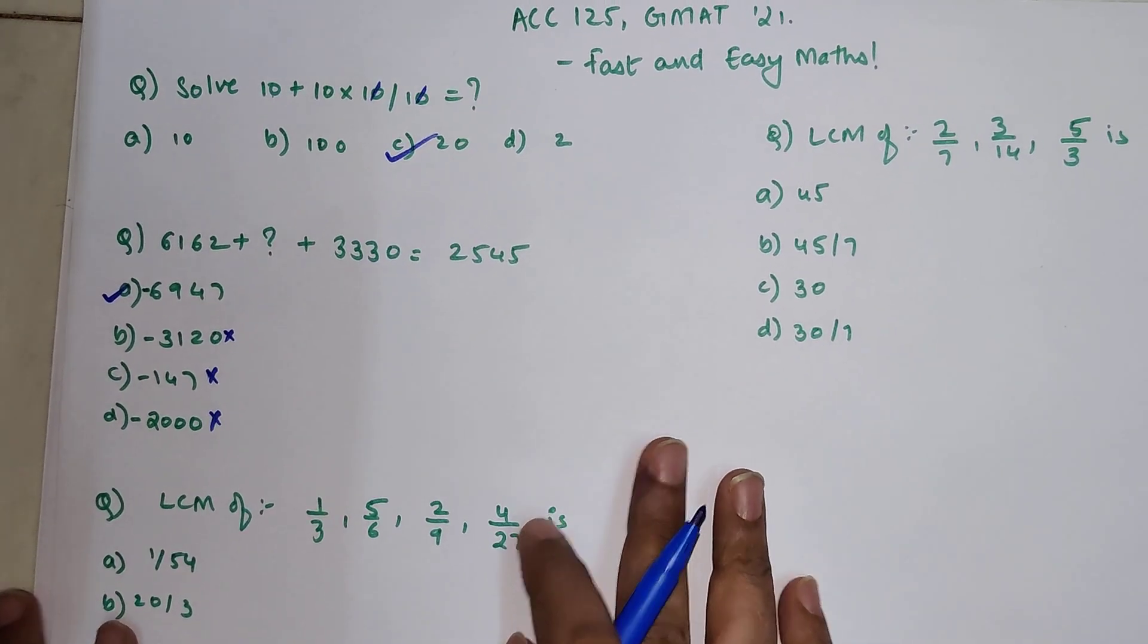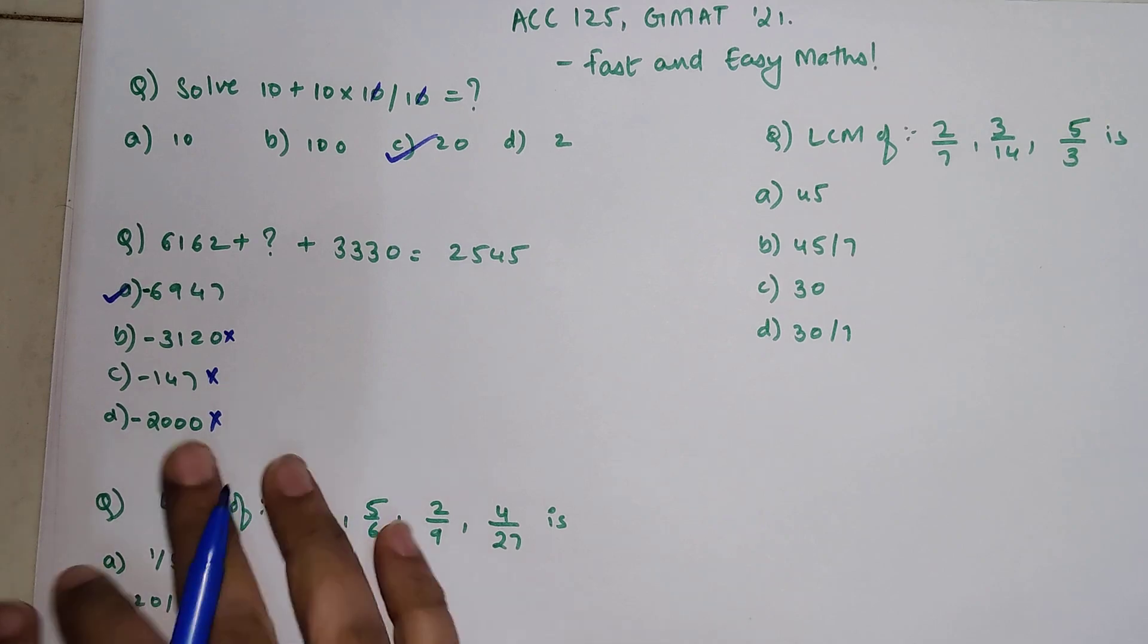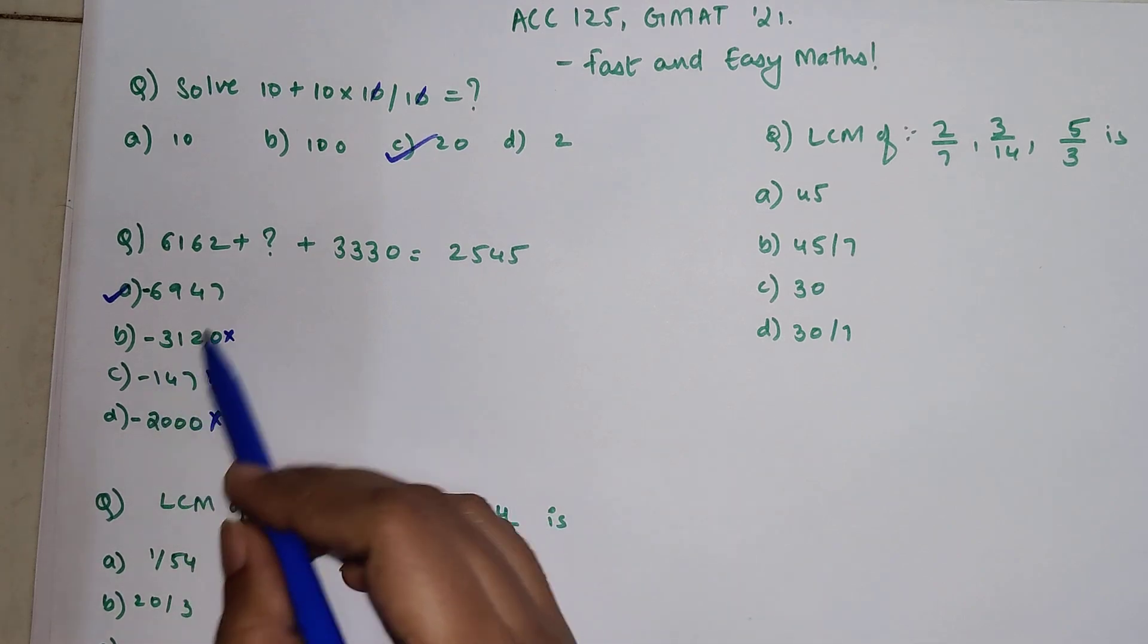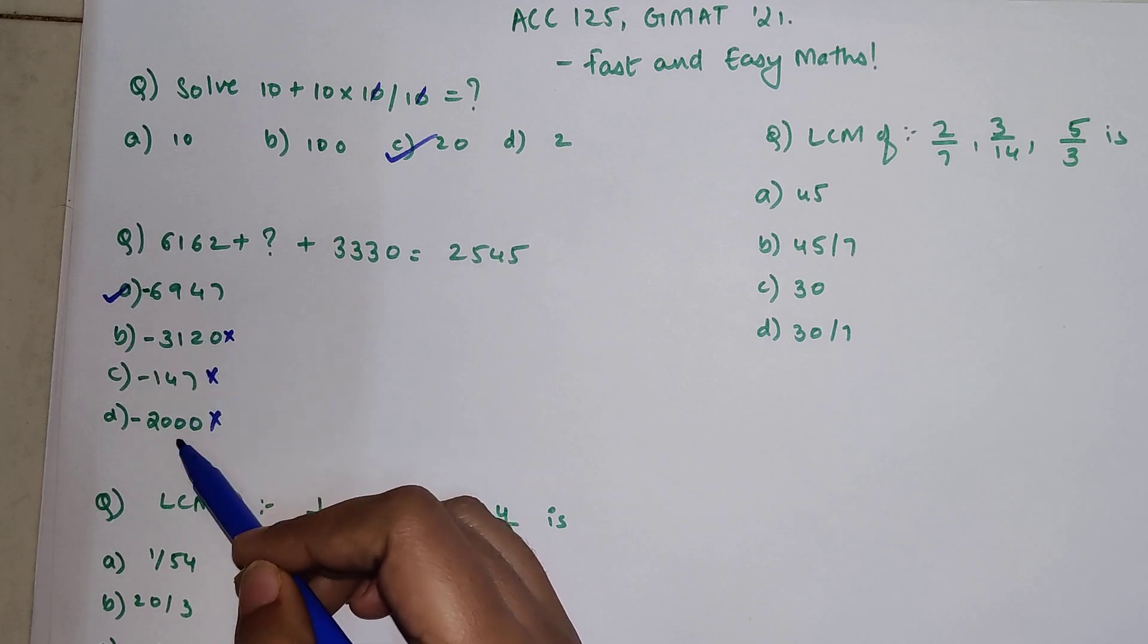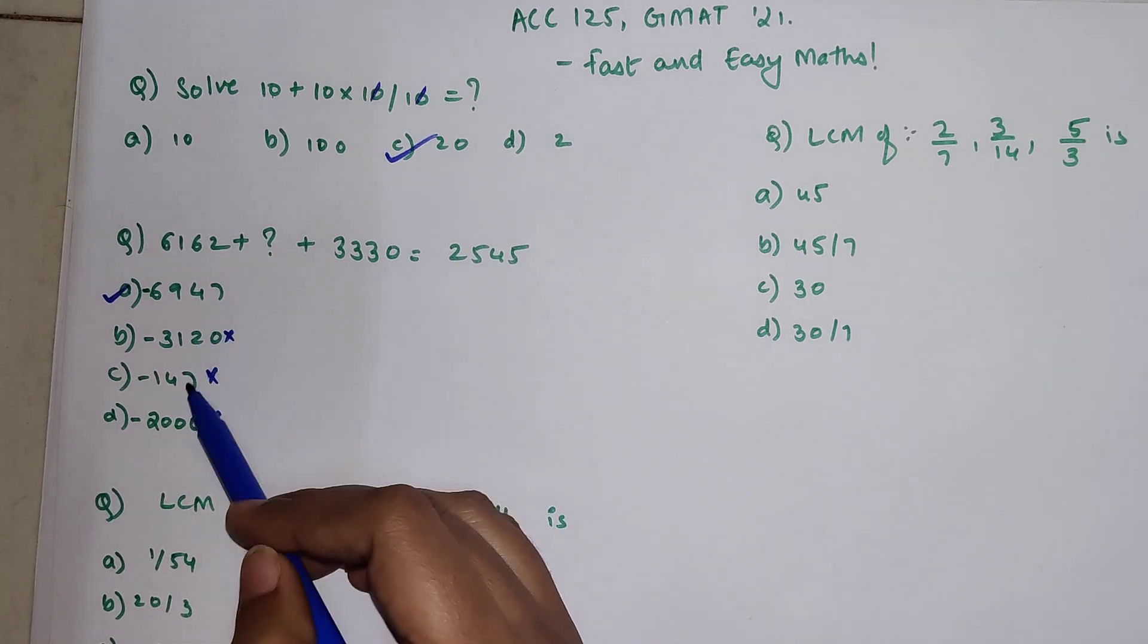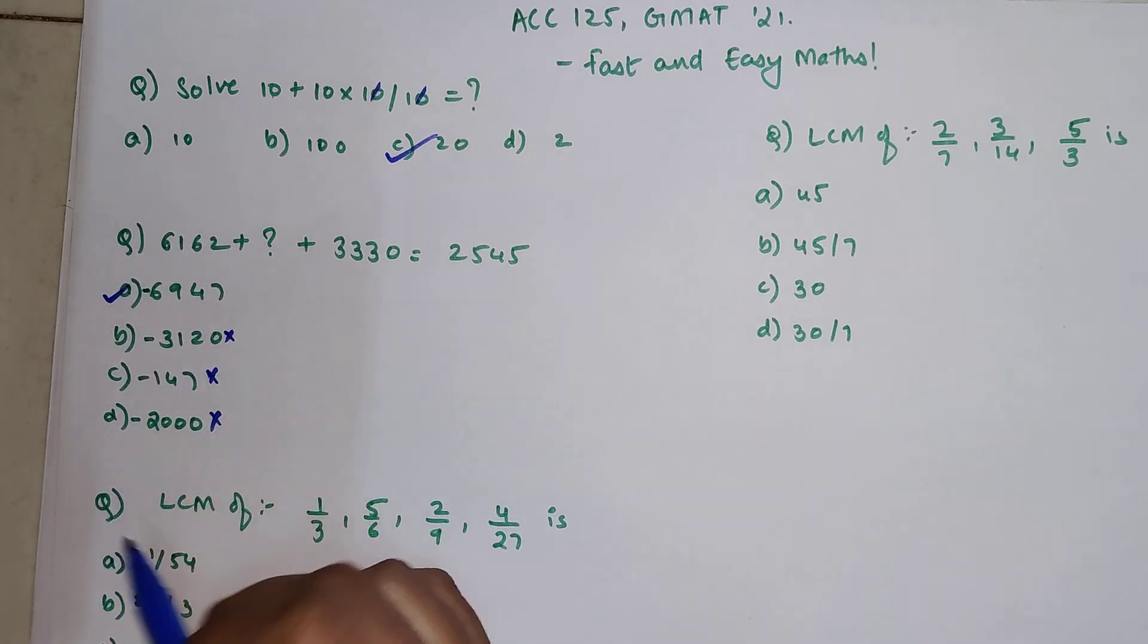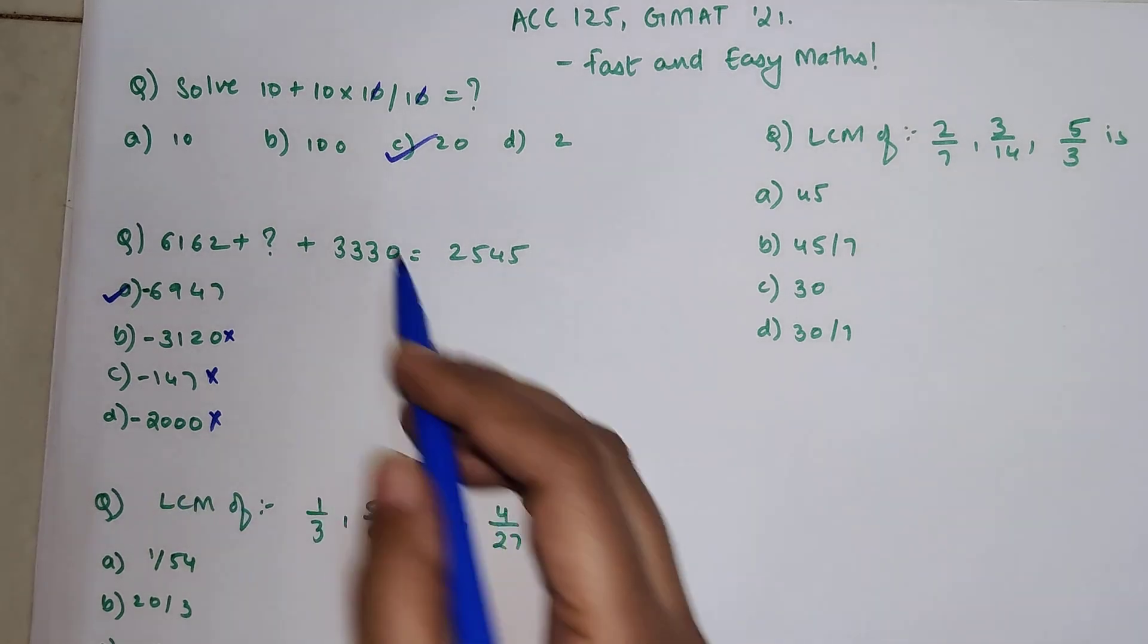Now this is something which we could have done because we got the options which are very easy to completely eliminate. But what happens when you have another option which says none of these? In that case you will have to solve. But still you can definitely disregard these two. Suppose these two were given and one option was given as none of these. These two were disregarded, then you can just put this value over here and see if your final answer is coming out to be this one. Super easy right?